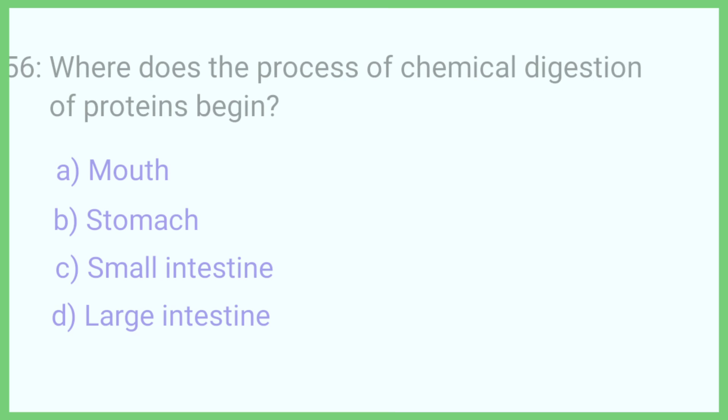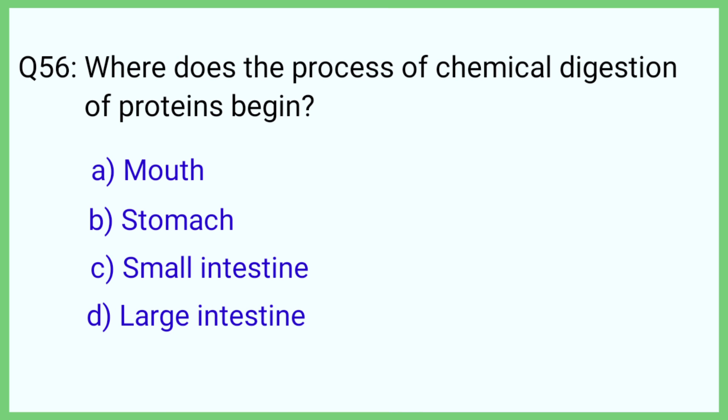Question number 56. Where does the process of chemical digestion of proteins begin? The correct answer is option C: Stomach.